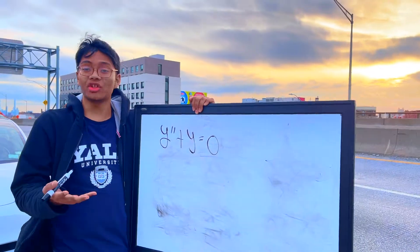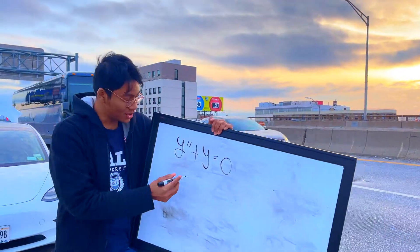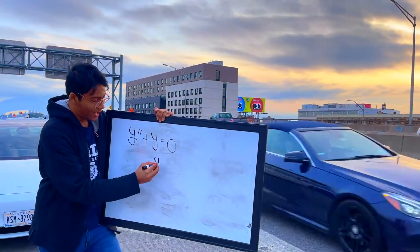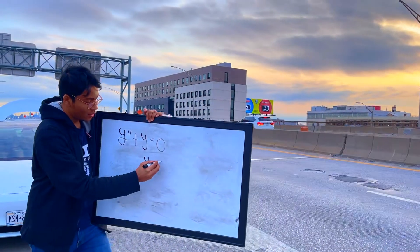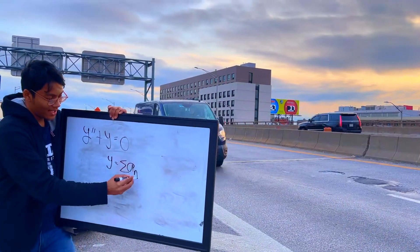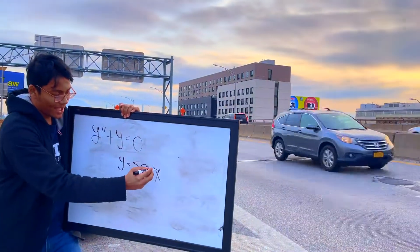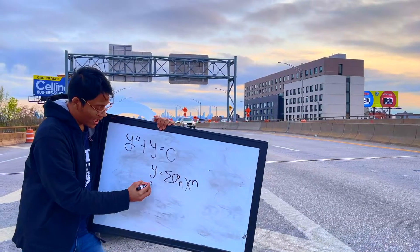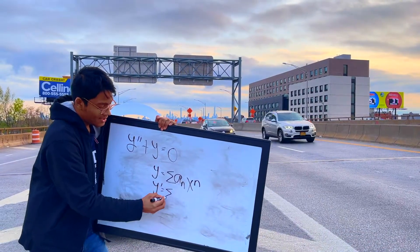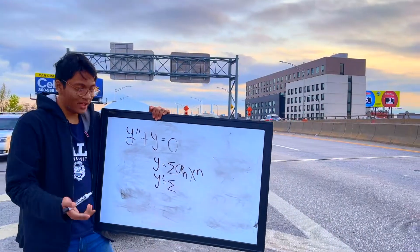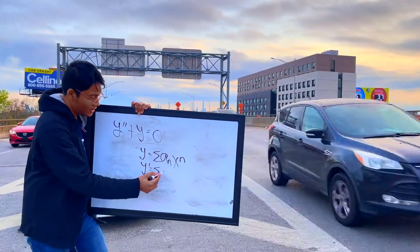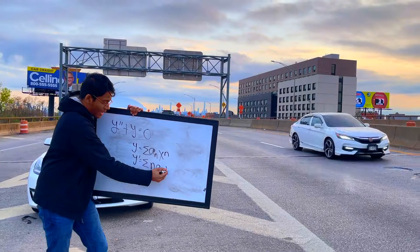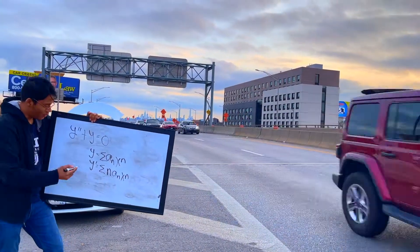Well, the first thing you've got to do is represent y using a power series. So y is equal to the summation of a sub n, x to the n — a sub n being the coefficients, x to the n being the power. So y prime, just differentiate as normal, take out that power of n. So you have n times a sub n, x to the n minus 1.